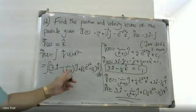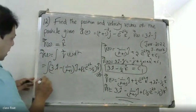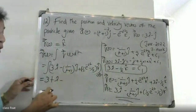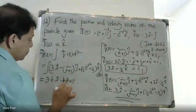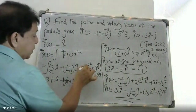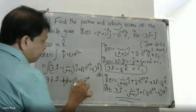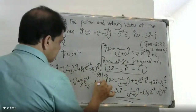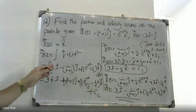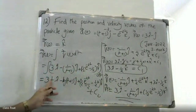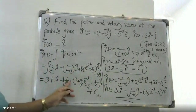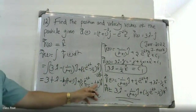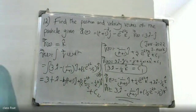Integrating with respect to t: 3i integrates to 3ti. The j component minus 1 by t plus 1 integrates to minus log t plus 1 into j. The k component 1 by 2 e raised to minus 2t integrates to 1 by 2 times e raised to minus 2t divided by minus 2, and minus 1 by 2 t, plus constant C2.